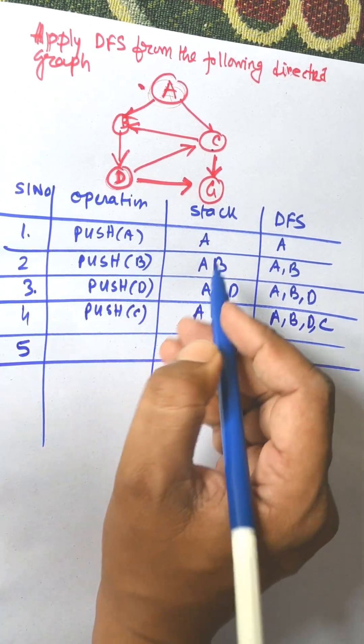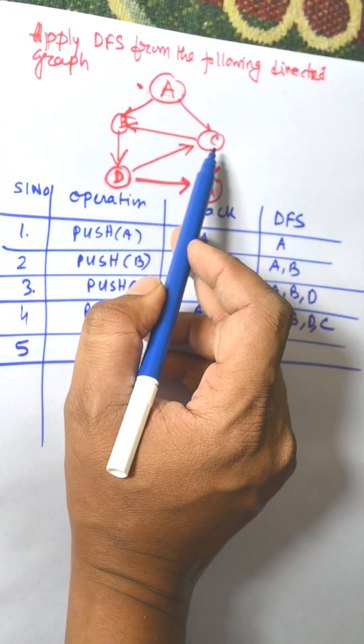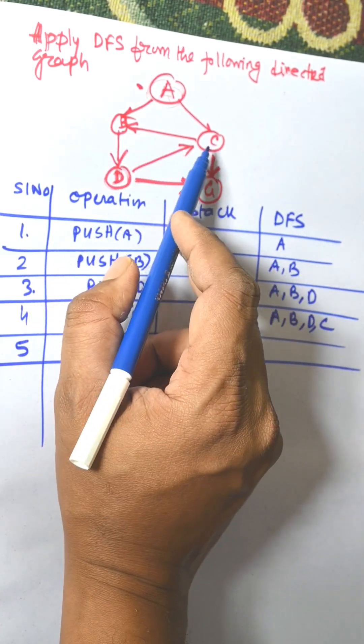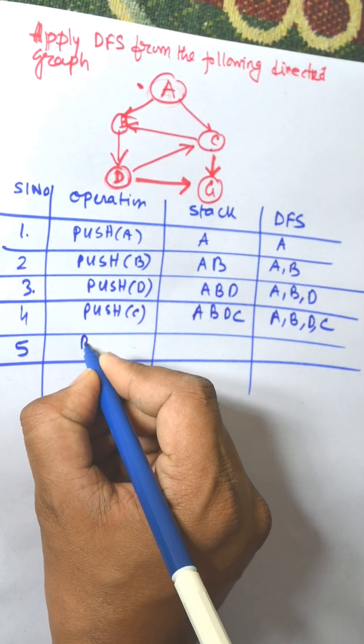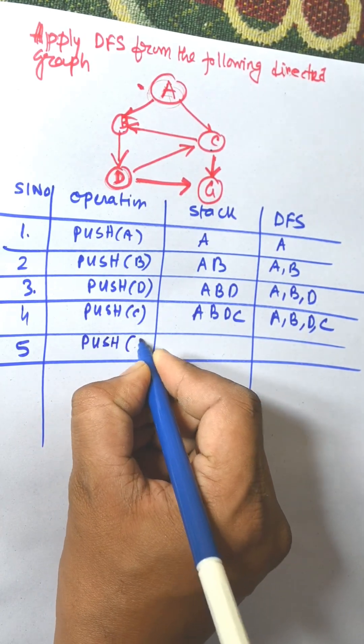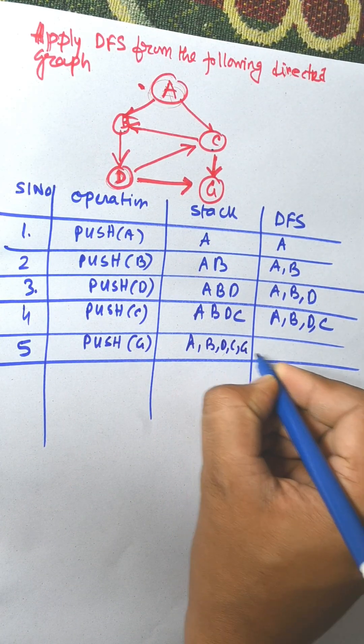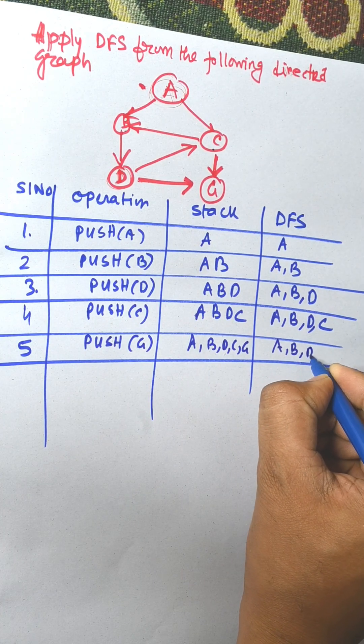Now from C, we can visit either B or C. B is already visited, so we need to visit G. That is push G. Stack is A B D C G. Answer is A B D C G.